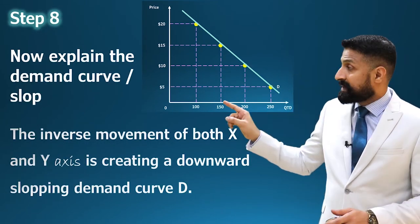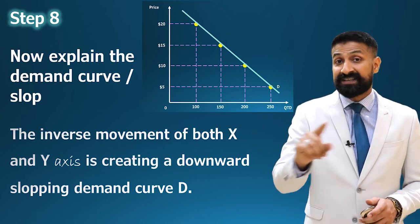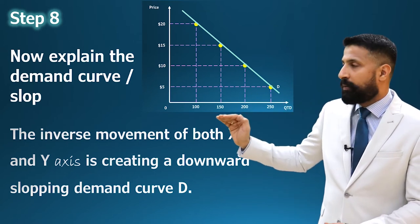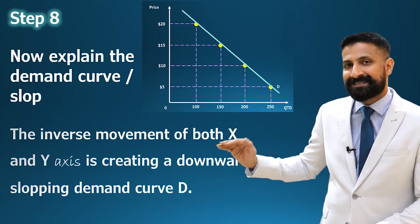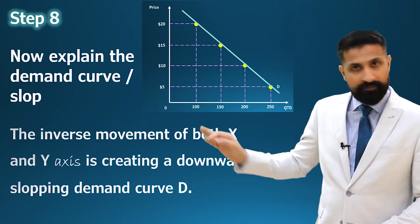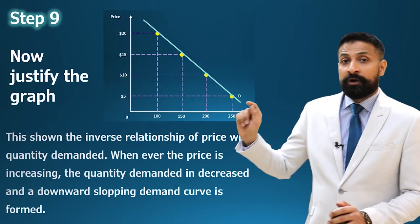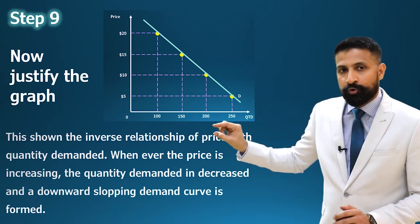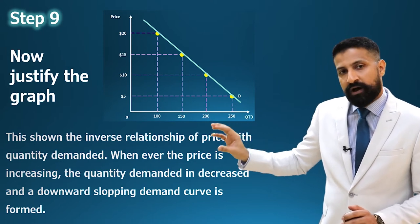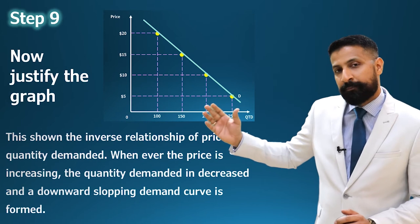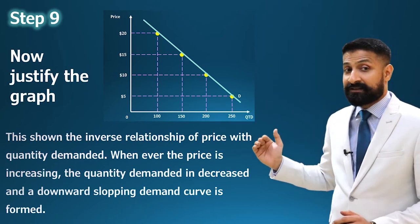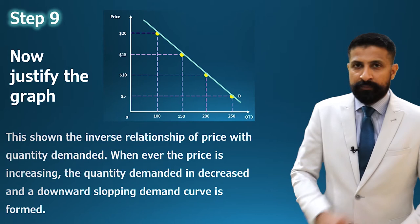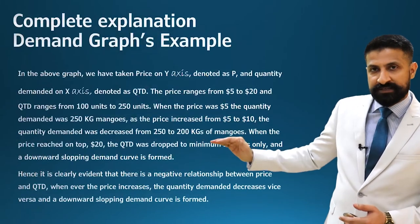Step eight: explain the demand slope — but explain the demand curve at the end, not at the start of your explanation. The sentence is: 'The inverse movement of both X and Y-axis is creating a downward sloping demand curve.' Step nine: justify the graph — for example: 'This shows the inverse relationship of price with quantity demanded; whenever the price increases, the quantity demanded decreases, and a downward sloping curve is formed.'